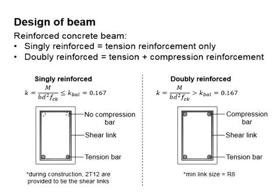To design a reinforced concrete beam, there are two types. The first one is singly reinforced beam, where there are only tension reinforcement. As for doubly reinforced beam, there will be tension and compression reinforcement.